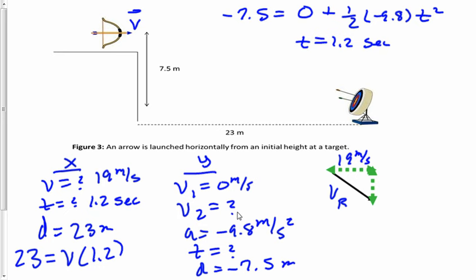So let's do the v2 equals v1 plus at equation. So v2 is equal to zero plus negative 9.8 multiplied by 1.2 seconds. Remember, that's the time it takes for it to fall and also to get there.